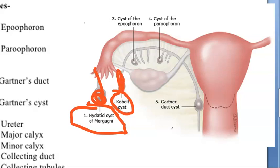So the outer ones they are calling cobalt, the middle set is the epoophoron, and the proximal ones they are calling paroophoron.